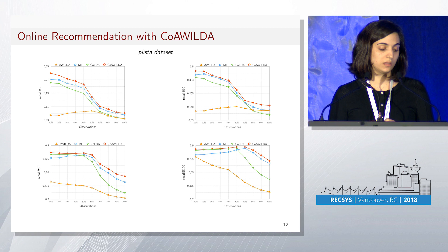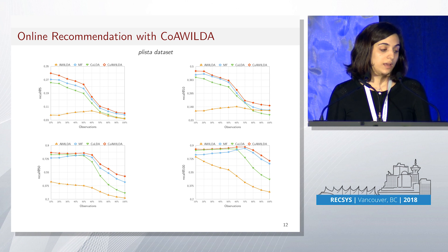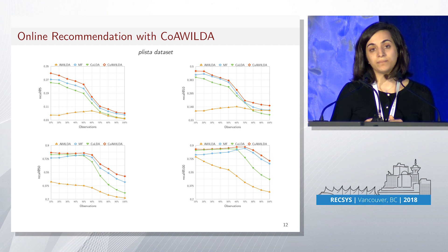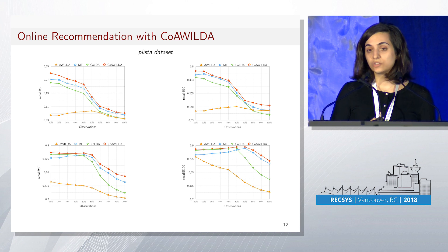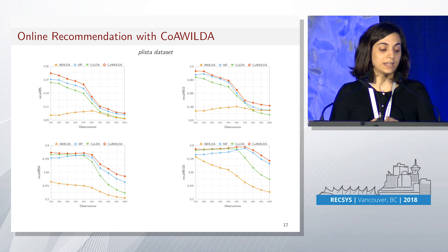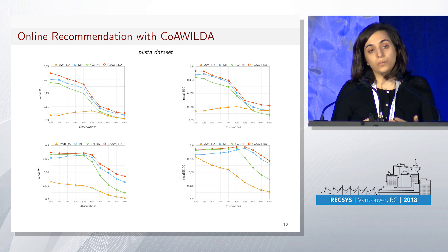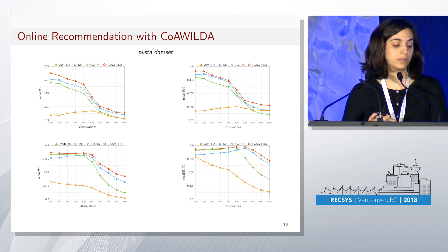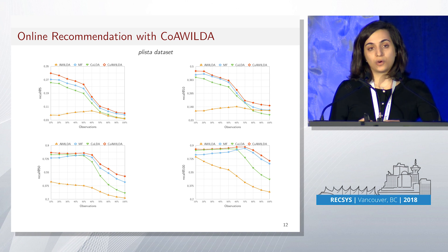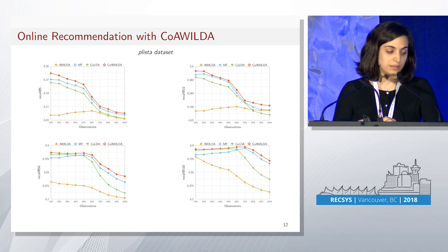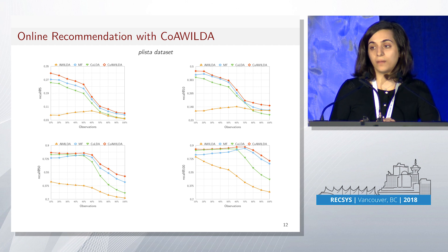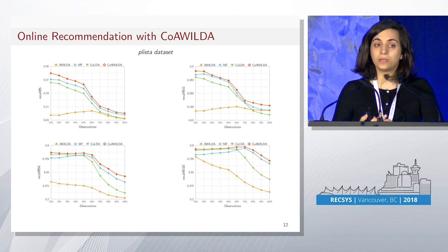We also evaluated the recall at different values of N. We can see that the textual description starts to lose its interest at different points in time with respect to the N that we're fixing. For lower N, since the beginning of the evaluation, the matrix factorization is outperforming the approach using text without the drift detection component.